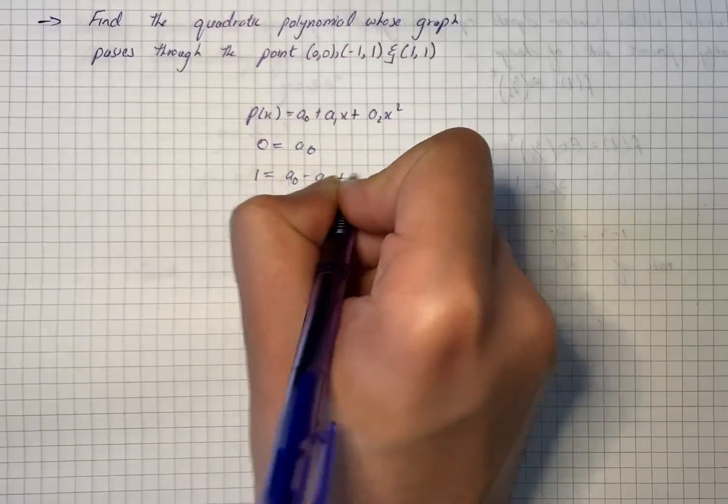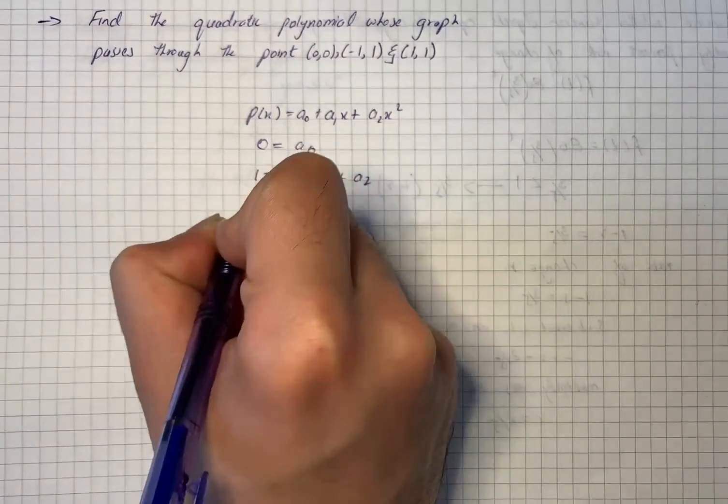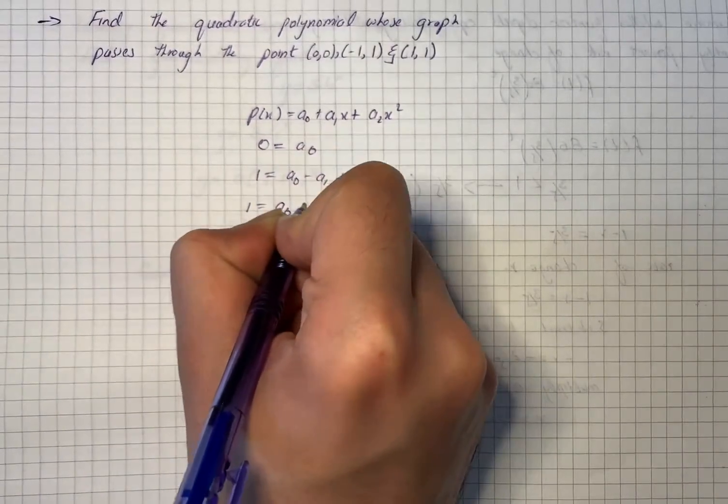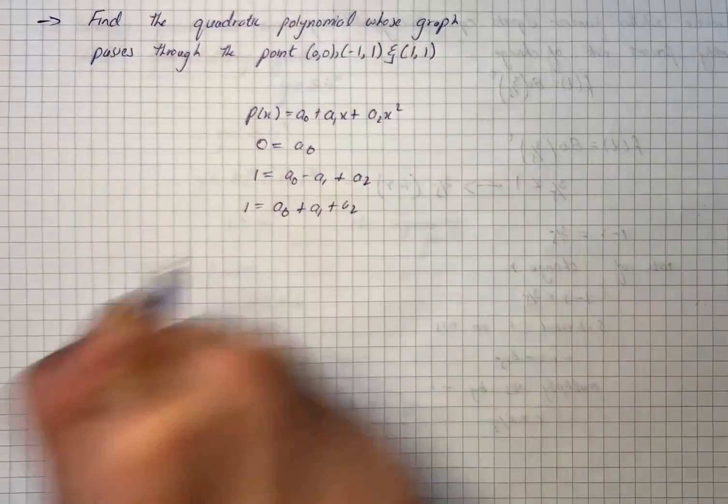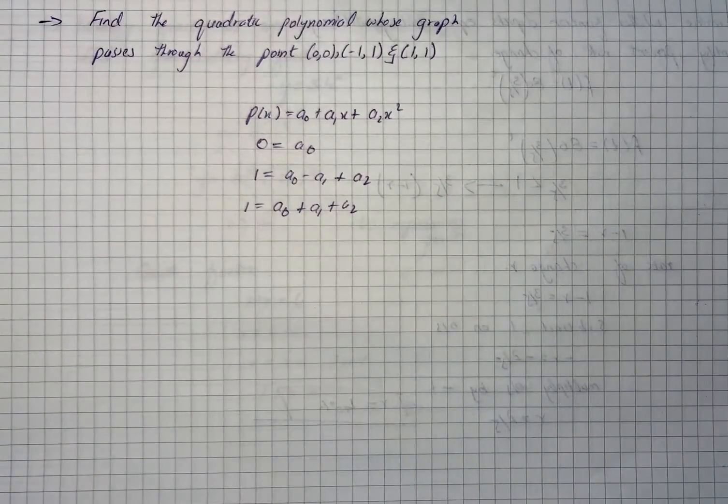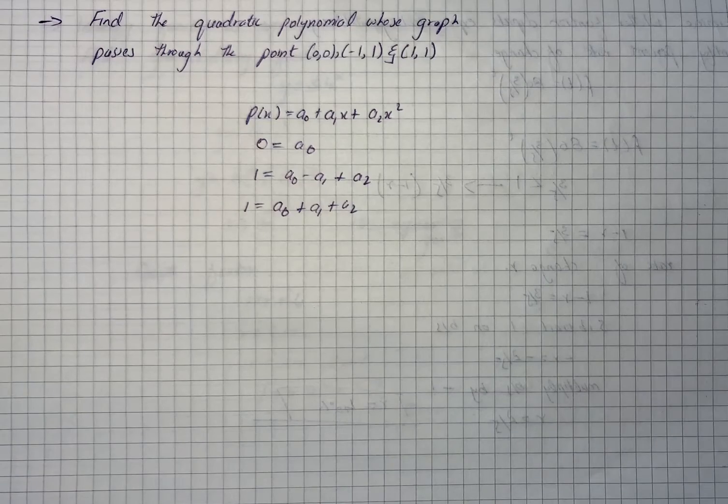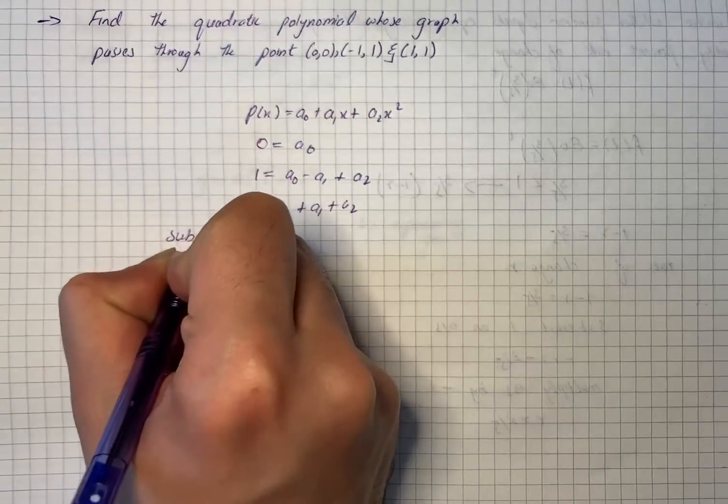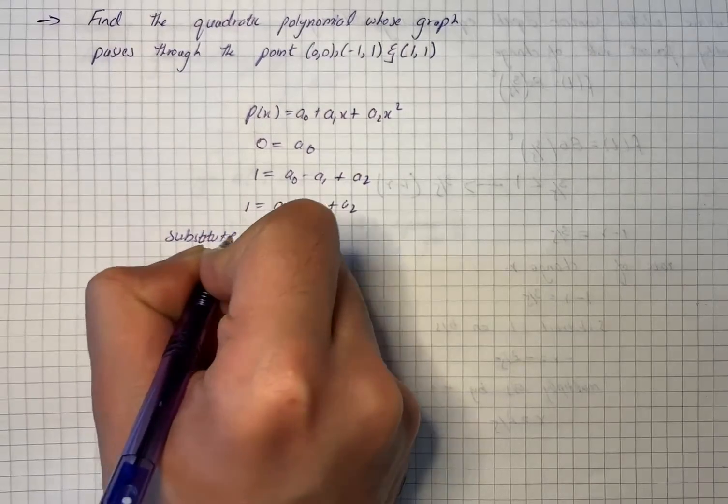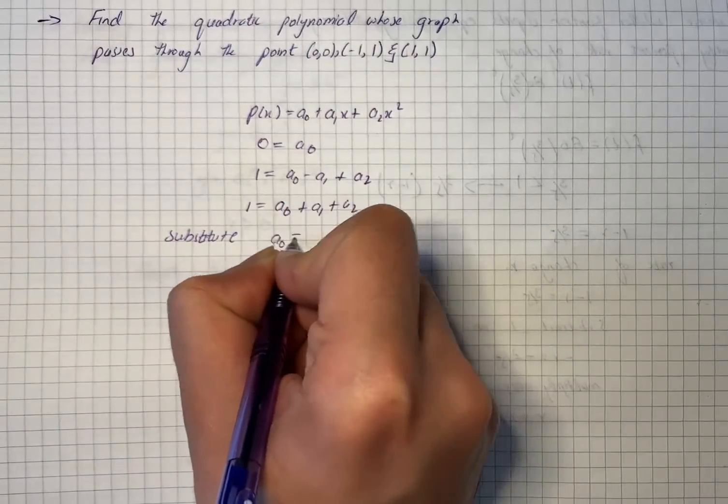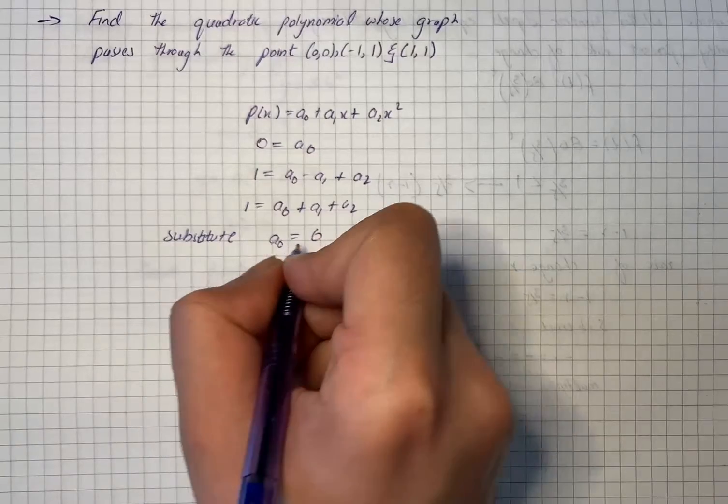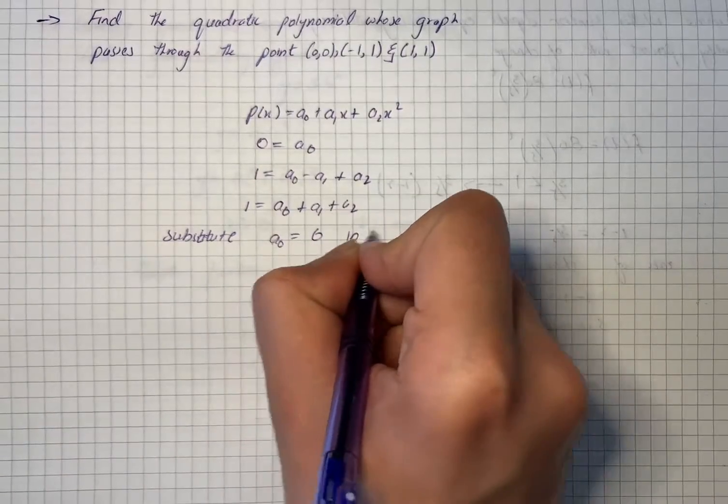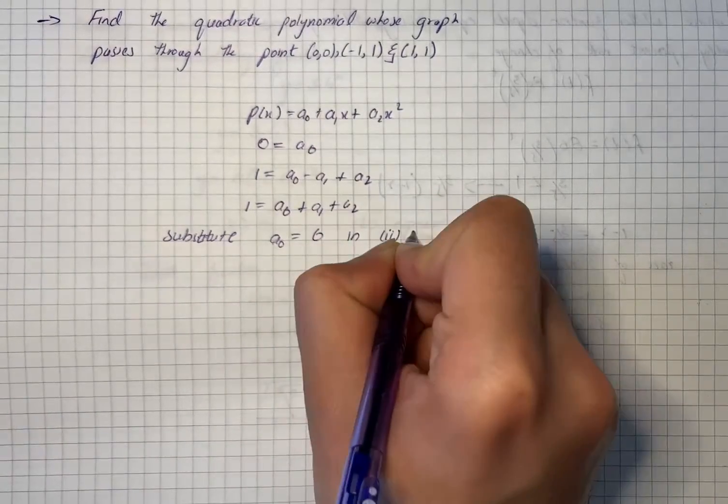So we have 0 equals a0, 1 equals a0 minus a1 plus a2, and then we have 1 equals a0 plus a1 plus a2. Now we can solve the system by inspection.